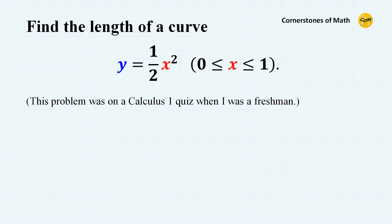Hello, and welcome to yet another video of Cornerstones of Math. Today's problem is very special, because it is one of the questions from the quiz I took when I was studying Calculus 1 in my freshman year. I have graduated college a long time ago, but this is one of the questions that I still remember to this day, and at the end of the video you will understand why. You have to find the length of a curve of y equals one-half times x squared, defined on x from 0 to 1. This problem is quite innocent looking and seems pretty simple.